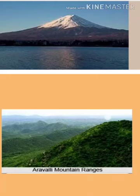This difference is because of the age of the mountains. The young mountains such as the Himalayas are very high and their peaks are conical, whereas old mountains such as the Aravallis are low in height and their peaks are rounded.